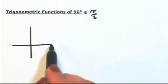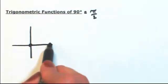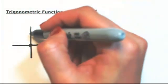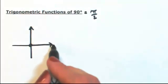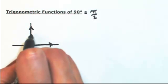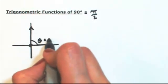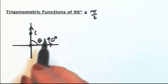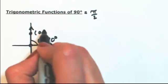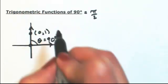Let me draw my angle in standard position, going up to 90 degrees. I'm going to pick a point on the terminal side of theta, which is again 90 degrees. So the x coordinate is going to be 0. The y coordinate — really just pick anything you want. For simplicity I'll choose 1.